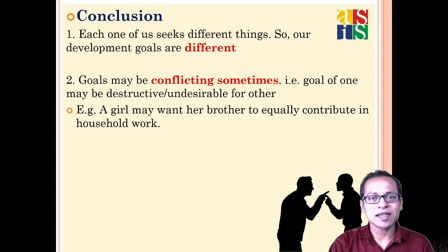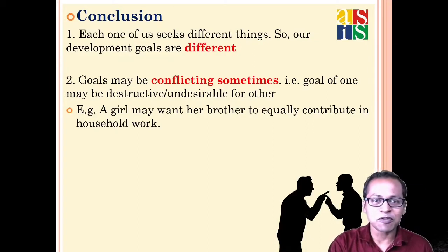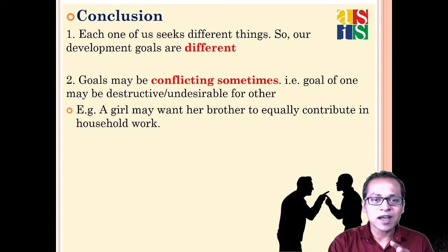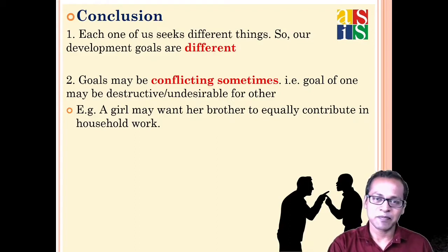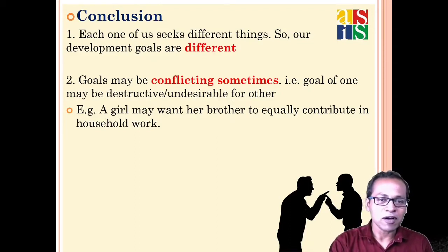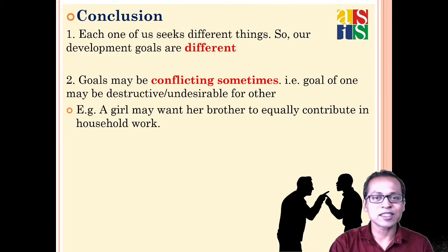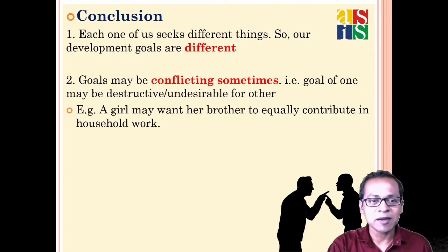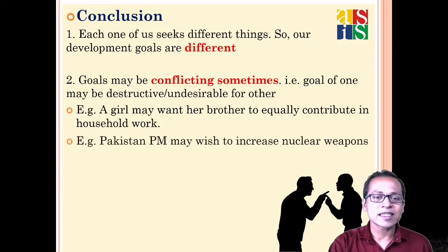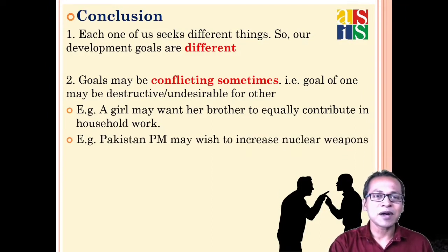A girl child may want her brother to contribute equally in household work, but her brother doesn't like to do so. The girl's goal is based on equality, which is good, but for the brother it is not desirable.